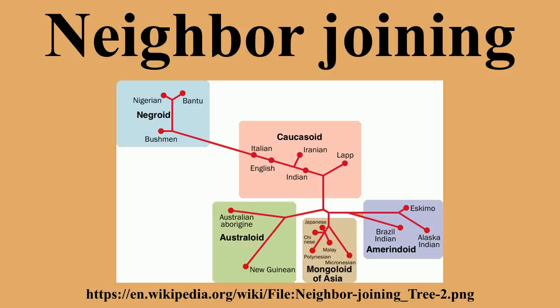Advantages and disadvantages. The main virtue of neighbor joining is that it is fast. This makes it practical for analyzing large data sets and for bootstrapping, for which purposes other means of analysis may be computationally prohibited. Neighbor joining has the property that if the input distance matrix is correct, then the output tree will be correct.